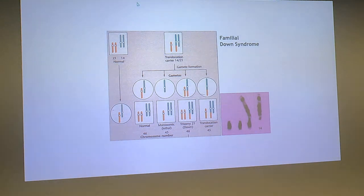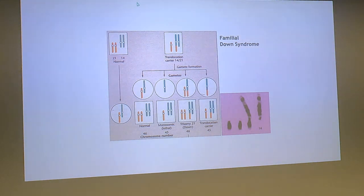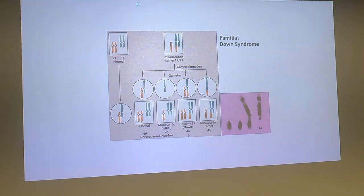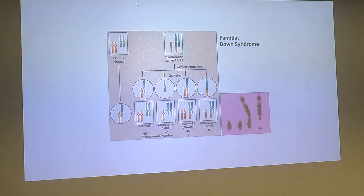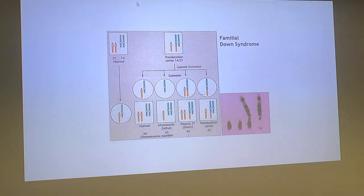In some cases this can propagate serious problems. Take familial Down syndrome. Down syndrome is normally caused by non-disjunction of chromosome 21 — you've got an extra chromosome 21. Most forms are not heritable; they don't run in families, it's just bad luck from non-disjunction.